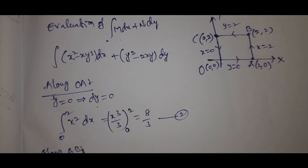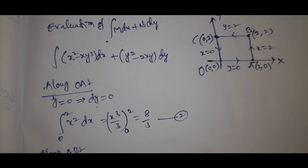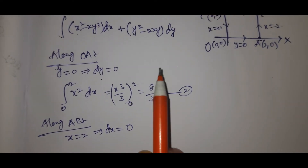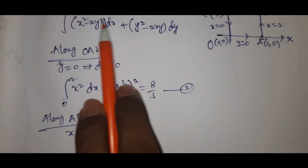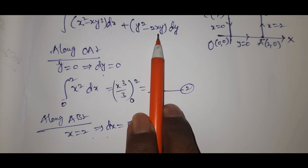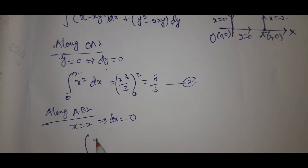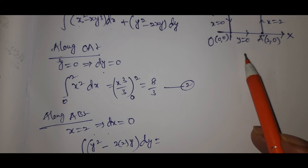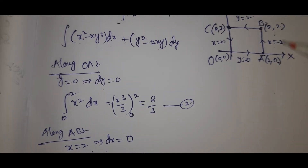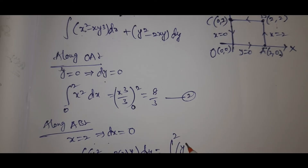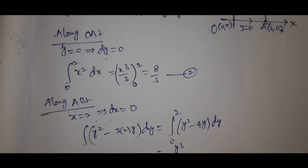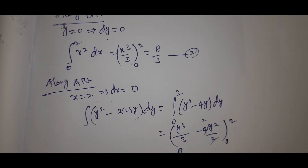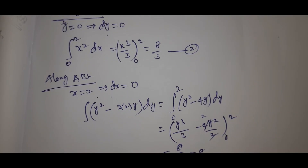Next, along AB, x equals 2, which implies dx equals 0. Substituting x equals 2, the integral becomes the integral of (y squared minus 2 times 2 times y) dy, which is (y squared minus 4y) dy from 0 to 2. This gives y cubed over 3 minus 4y squared over 2, evaluated from 0 to 2, which equals 8 over 3 minus 8. This is equation number 3.